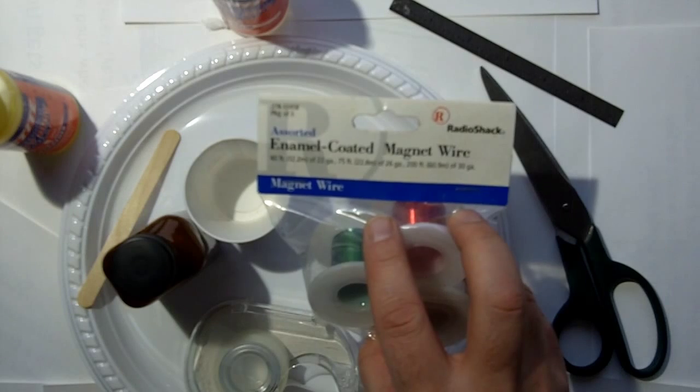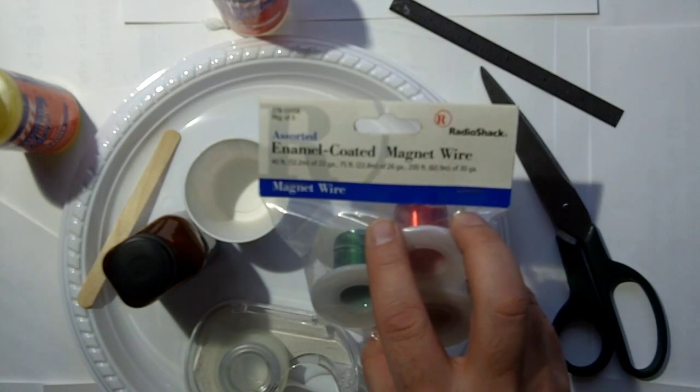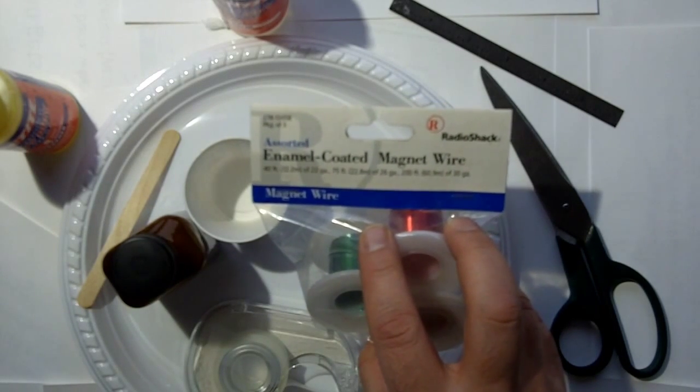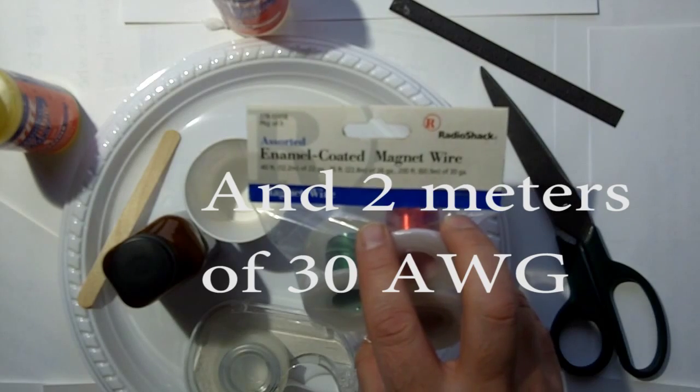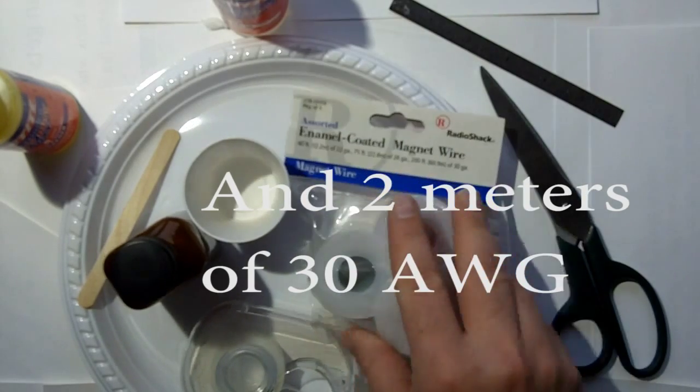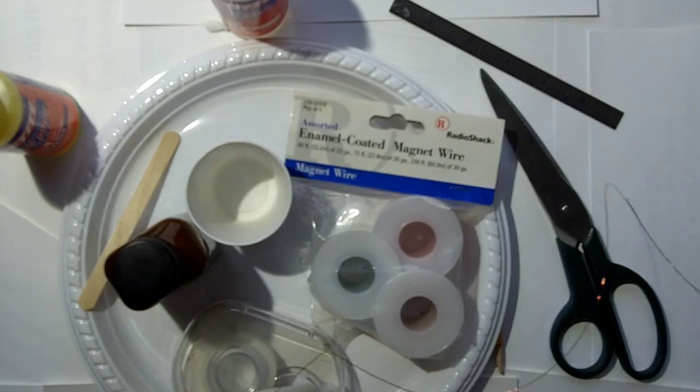I don't know if Radio Shack is going to come back in business, but you need a small portion, about a meter's worth of 22 gauge and a meter's worth of 26 gauge. This magnet-coated wire, I buy it in bulk anyway, so I get it in big spools.